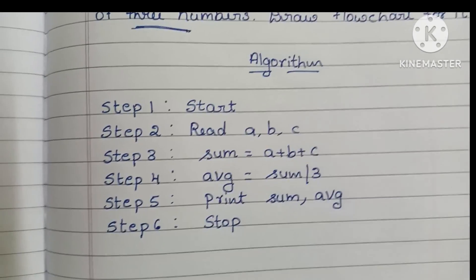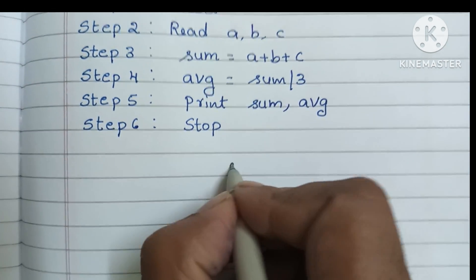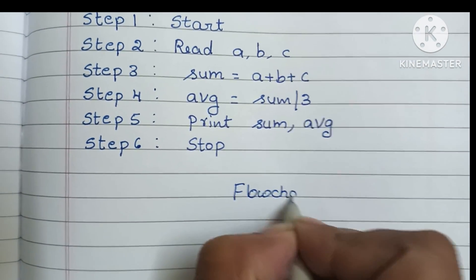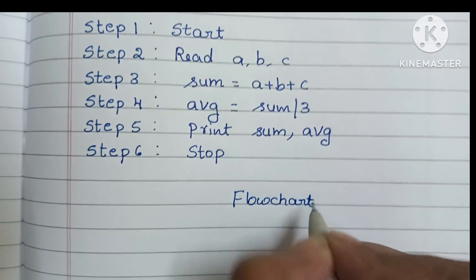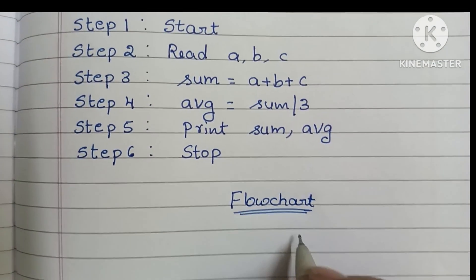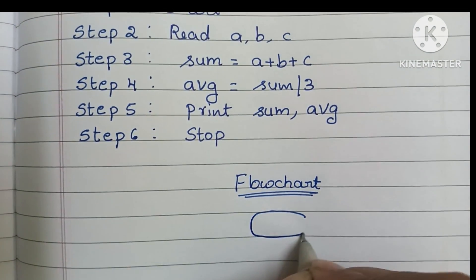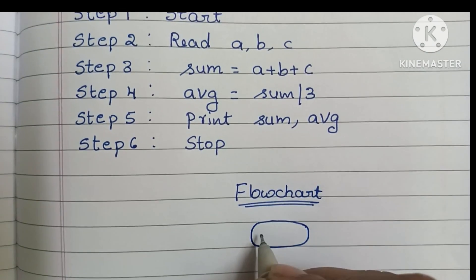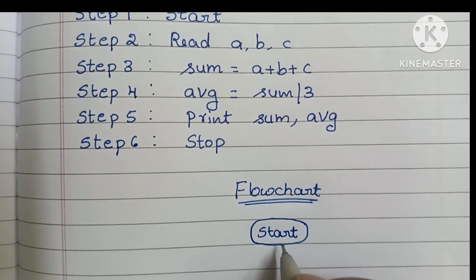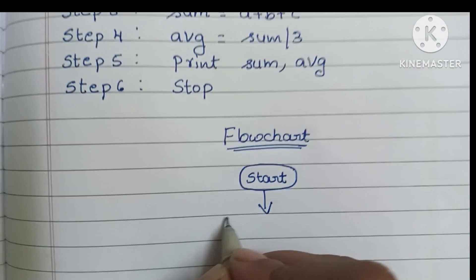Next, we have to draw the flowchart. A flowchart is a graphical representation of a solved problem. A flowchart always starts with the start statement, which is written within an oval shape.